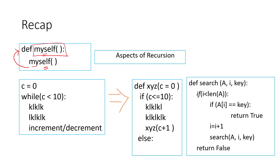With recursion we will use loop keywords. With loop keywords we will call while and for range, etc. We will use this. The question is, for while we will see how recursion works. We will see the problem with recursion. For example, in the future we will see data structures named trees and graphs.